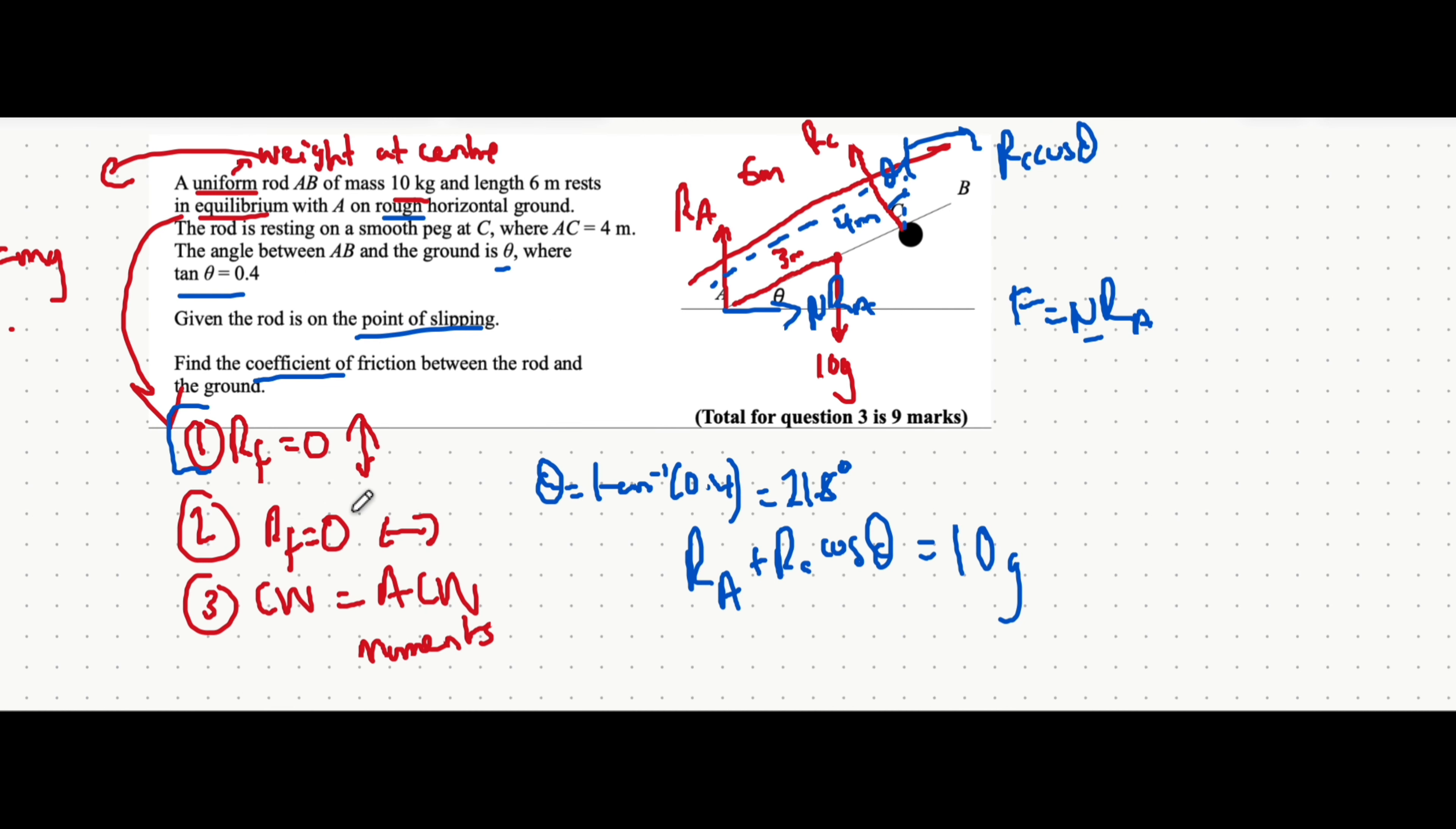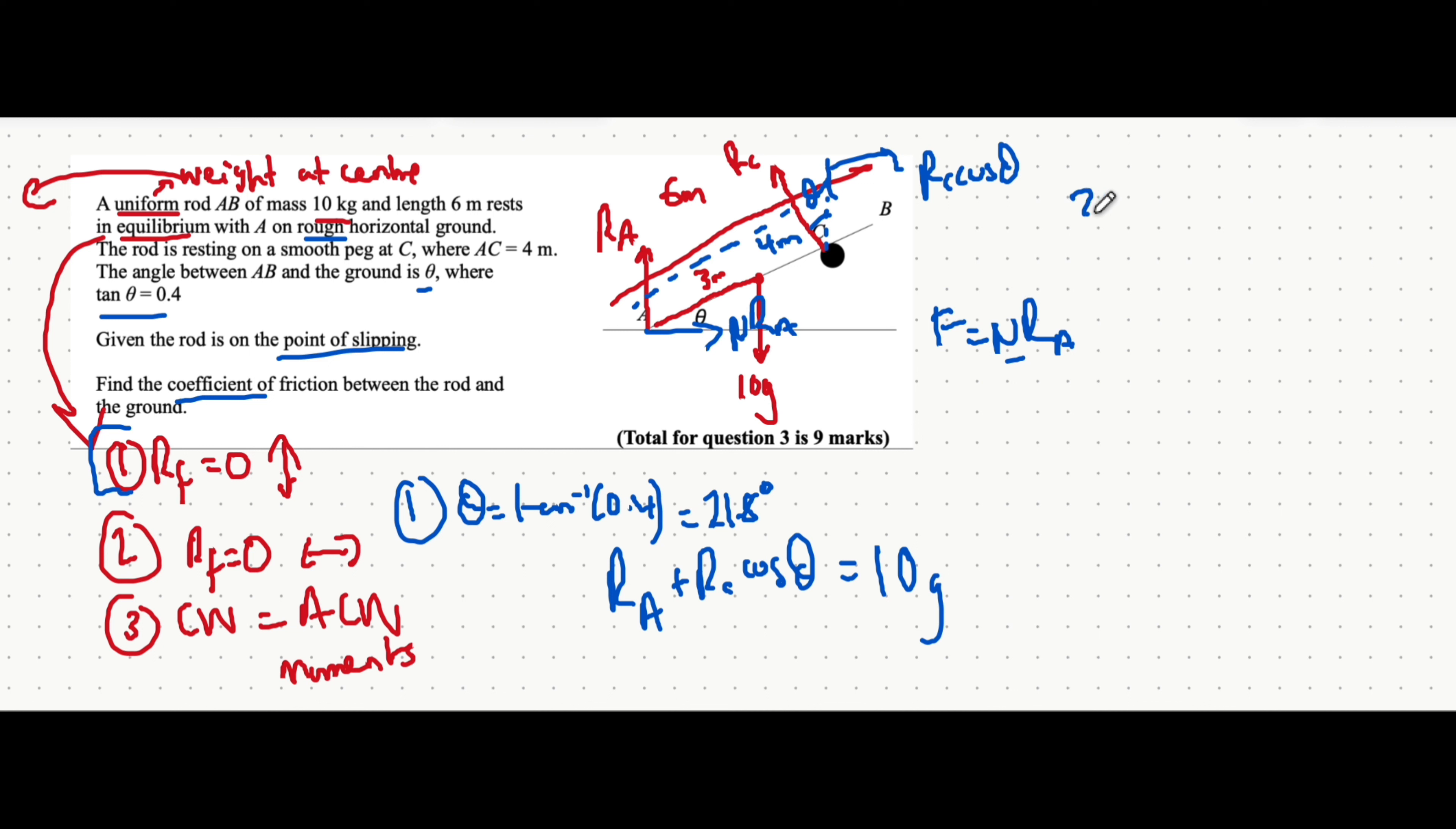Let's use number two now. The resultant force in the horizontal direction is zero. That means all the forces acting to the right, which is the frictional force. What other force is there? No other force acts to the right. But you have to be very careful because the reaction force at C has a component to the left.